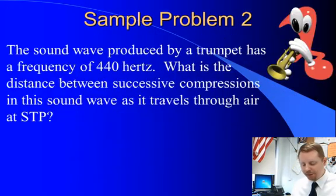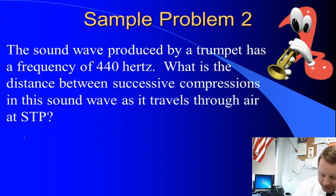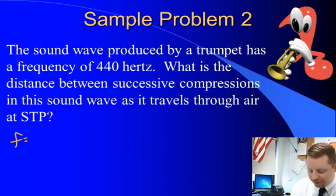Alright, let's try another one. The sound wave produced by a trumpet has a frequency of 440 Hz. What is the distance between successive compressions in this sound wave as it travels through air at Standard Temperature and Pressure? So frequency, 440 Hz.